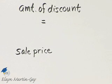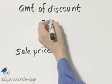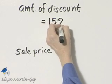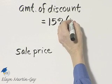Make sure you read and reread this problem. We're given that we have a $120 framed picture and it's on sale for 15% off. We want to find the discount and the sale price. Remember how you first find the amount of discount? You multiply the discount rate — given to us as 15% — by the original price, which is $120.